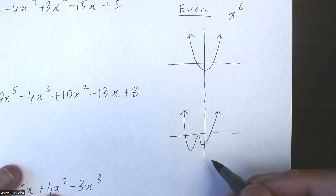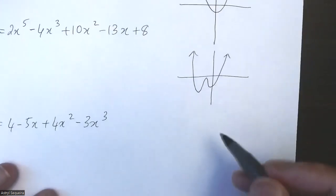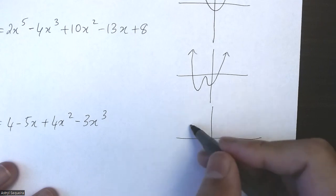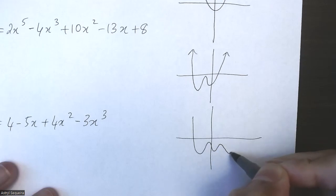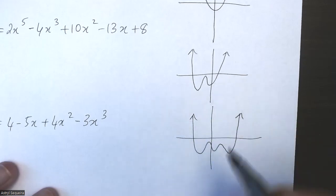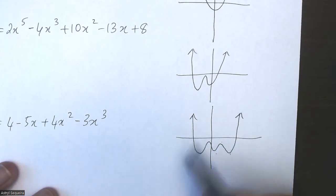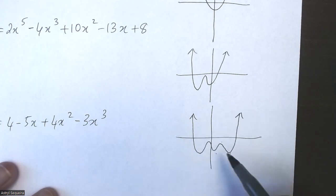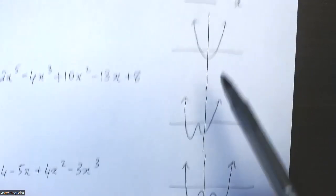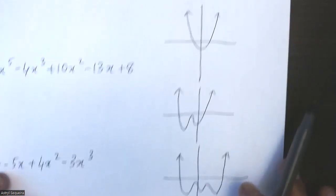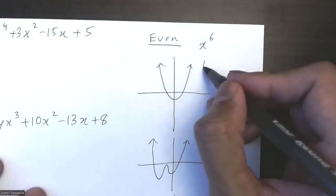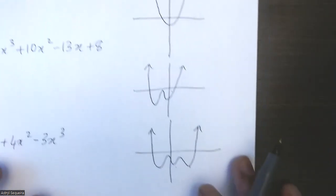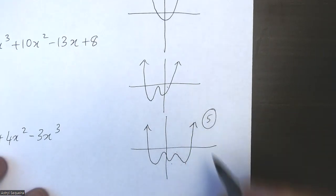This is also basically the same as an x to the power of 4 function. And x to the power of 6 can also look like this, which has one, two, three, four, five turning points. This is basically what usual x to the power of 6 functions look like. Remember, it can look like any one of these three. So the minimum number of turning points for an x to the power of 6 function is one, and the maximum number of turning points is five.